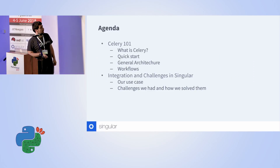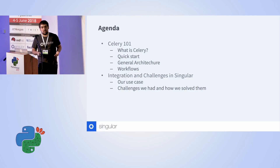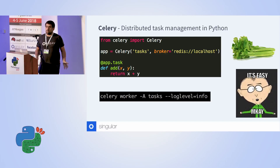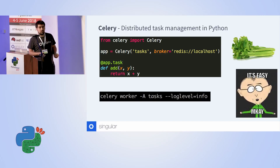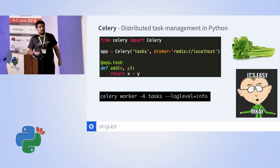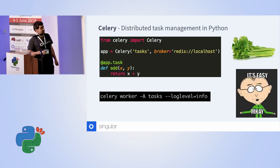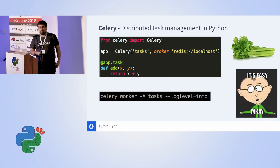I'll do a short introduction for people that don't know Celery, and then I'll dive into the integration we did and some challenges we had while using it. So Celery is a task management system — it basically allows you to distribute tasks on different servers where you can allocate different resources to different types of tasks. It was really convenient for us; we had a significant pipeline that we had to implement.